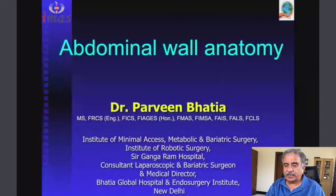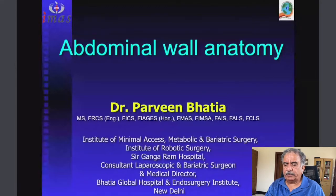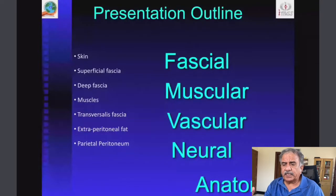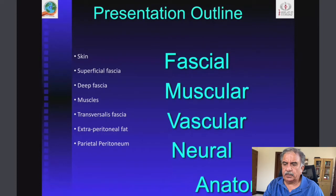Thank you very much. I will be discussing about Abdominal Wall Anatomy, and I bring greetings from the Institute of Minimal Access Metabolic and Bariatric Surgery, Institute of Robotic Surgery, Sir Gangaram Hospital, and Bhatia Global Hospital and Endo-Surgery Institute. The presentation outline goes from outside to inside: skin, superficial fascia, deep fascia, muscles, transverse fascia, extra-peritoneal fat, and parietal peritoneum. I will classify the presentation into Fascial Anatomy, Muscular Anatomy, Vascular Anatomy, and Neural Anatomy.